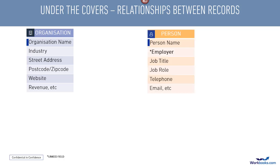On the screen now is a box showing some information about the kind of data you'd expect to find on a person record. Again, we can see there's a mandatory field — their person name is mandatory — but notice that the employer field, the second one down, isn't.